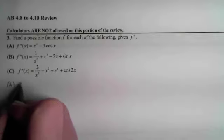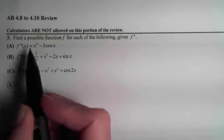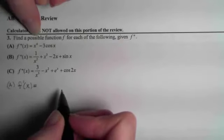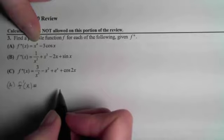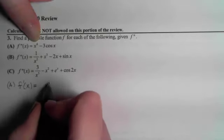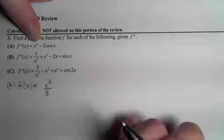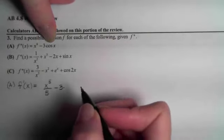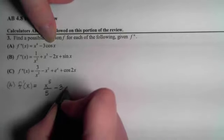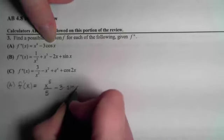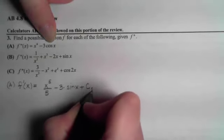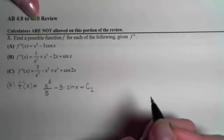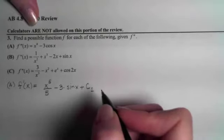Looking at part A, we need to ask ourselves: what did we take the derivative of that gave us this? That would be f prime. To find the antiderivative of this, we do the power rule backwards — we add one to the power and then divide by the new power. Then we ask: what did we take the derivative of that gave us a cosine? The answer is a sine, plus a random constant. Since we don't know what that constant is and don't have a point to nail it down with, we leave it as c sub 1.